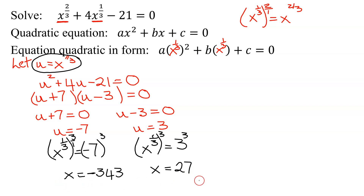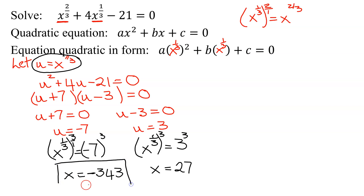Do we have to check these answers for extraneous solutions? In this case, no. As long as the denominators of the fractional exponents are odd numbers, you do not have to check for extraneous solutions. So our two solutions are x equals negative 343 and x equals 27.